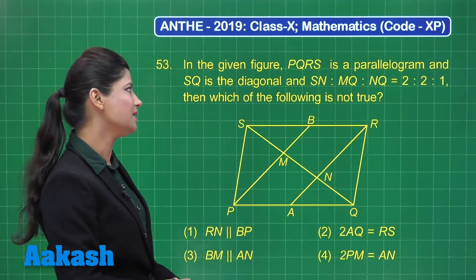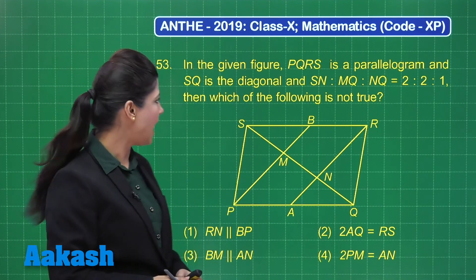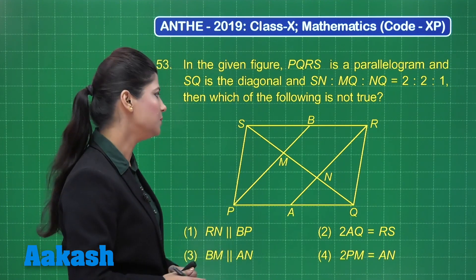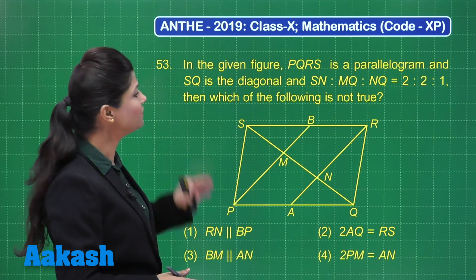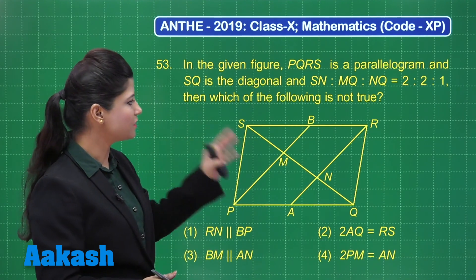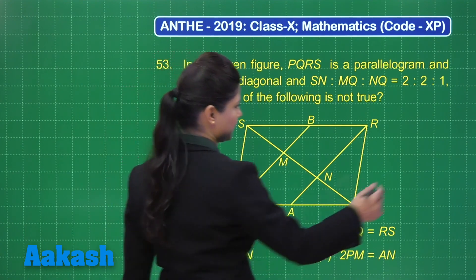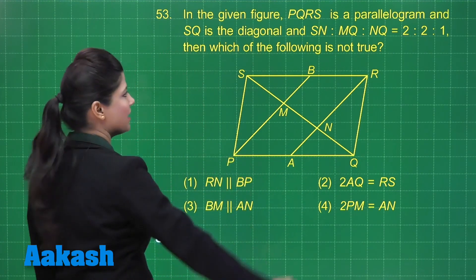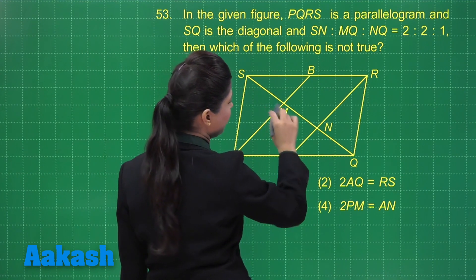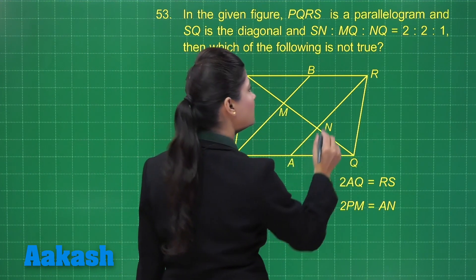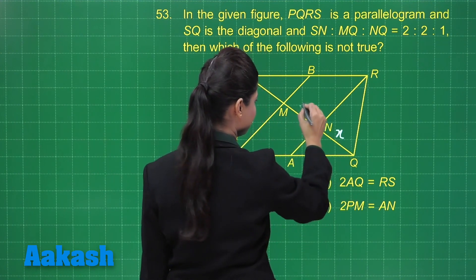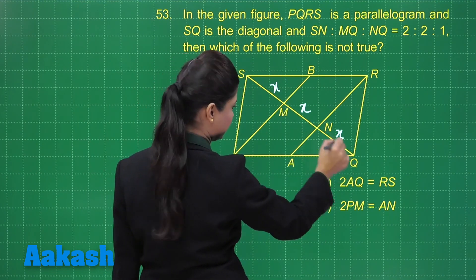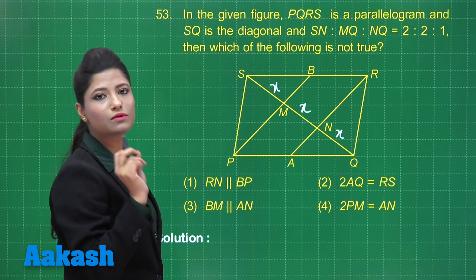The next question states that in the given figure PQRS is a parallelogram, SQ is the diagonal, and SN to MQ to NQ is equal to 2 to 2 to 1. Then which of the following is not true? Let us first focus on this given diagram. If we consider the ratio segments as x, then SN will be 2x, MQ will be 2x, and NQ will be x, giving the same ratio 2 to 2 to 1.